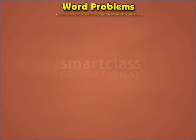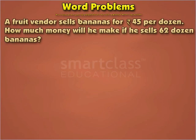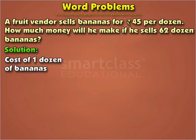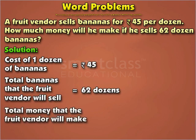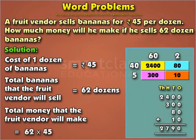Lastly, we will learn how to solve word problems involving multiplication. A fruit vendor sells bananas for 45 rupees per dozen. How much money will he make if he sells 62 dozen bananas? The cost of one dozen bananas is 45 rupees, and the total bananas sold is 62 dozens. To find the total money made, we multiply 62 by 45. So, the total money the fruit vendor will make is 62 into 45, which equals 2,790 rupees.